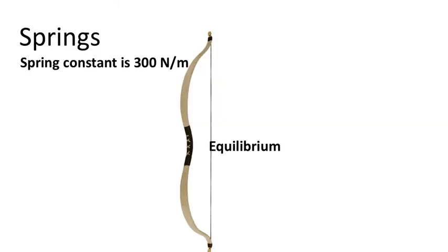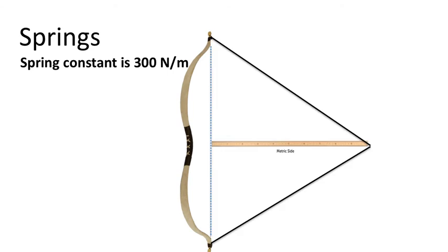So why do we investigate springs? Well, there are many materials and objects that behave like a spring does, such that there's a linear relationship between the extension and the force. A bow is one such object. This is the equilibrium position for the bow. And one such bow we've tested has a spring constant of 300 newtons per meter. So what does that mean?